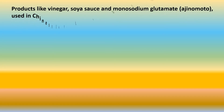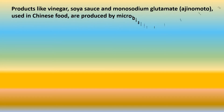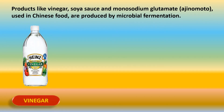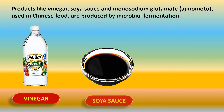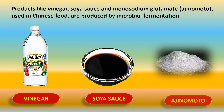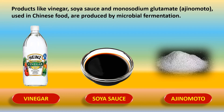Products like vinegar, soya sauce, and monosodium glutamate — also called ajinomoto, used in Chinese food — are produced by microbial fermentation. Microbes are added to a substrate, the process of fermentation takes place, and these different products are formed.